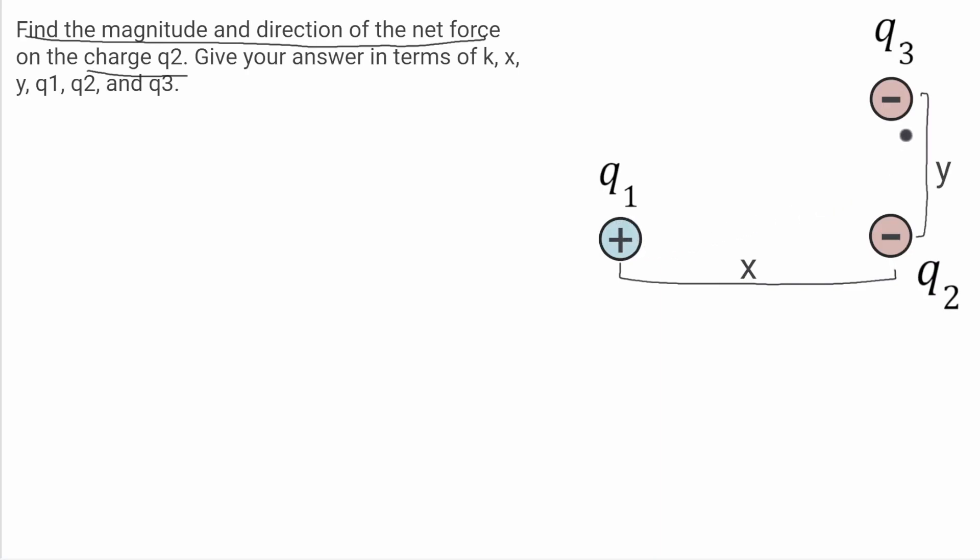So immediately, I can say that q2 is going to be repelled by q3, and q2 is going to be attracted to q1. So I already know that the resultant vector is going to be somewhere to the bottom left.